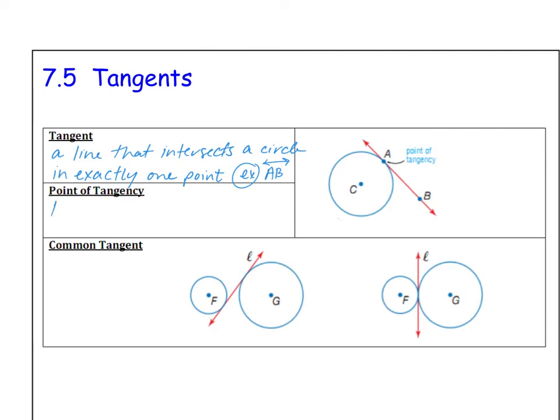You can see the point of tangency. That's where the line actually touches the circle or intersects the circle. So we can write that: the point where a tangent intersects a circle. In this case, the point of tangency is A. That is the point where the line intersects the circle.